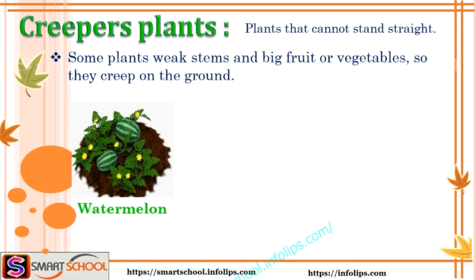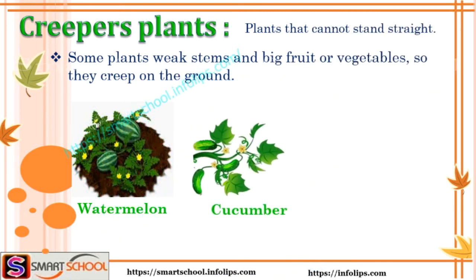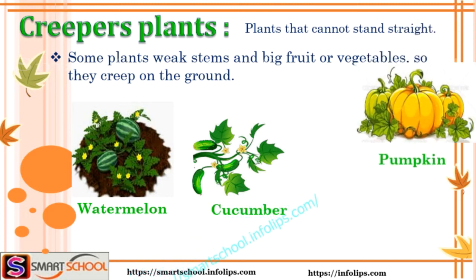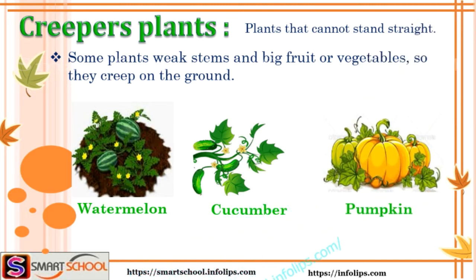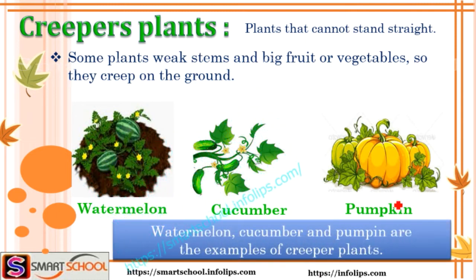The first creeper is watermelon, the second one is cucumber, and the third one is pumpkin. So watermelon, cucumber, and pumpkin are examples of creeper plants.